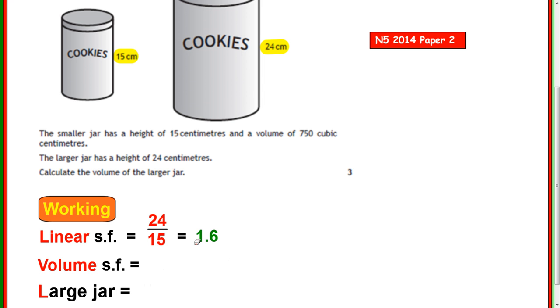Now, to get the volume scale factor, you cube this number, so 1.6 cubed, it comes to 4.096. Again, what we're seeing is this volume is just over 4 times bigger than this volume. And this was 750, so you take your 750 and you times it by 4.096, and you get your answer of 3072. You can see it's three marks here. One for your linear scale factor, one for your volume scale factor, one for your multiplication.